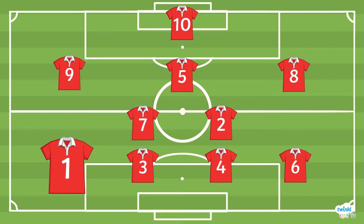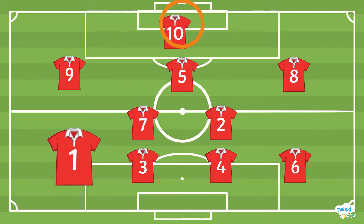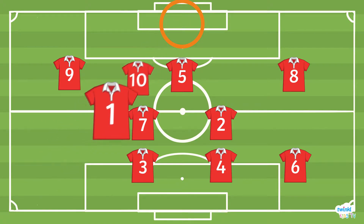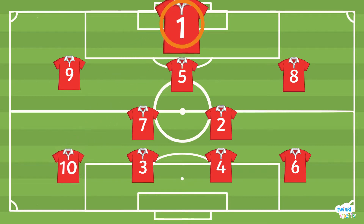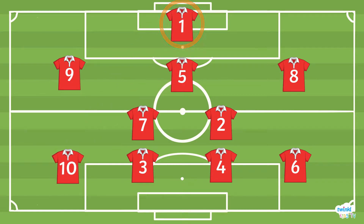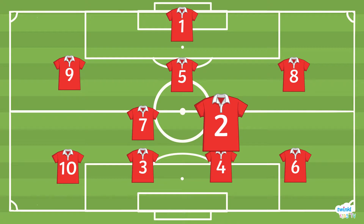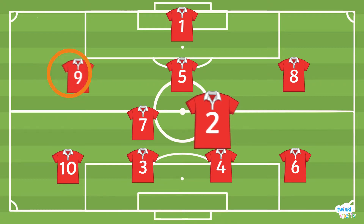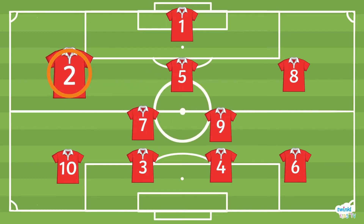Let's start with number 1. We need to swap number 1 with number 10, as number 1 is at the beginning of the number line. Next is 2, but 9 is in 2's place. Let's swap them so that 2 can go after 1.